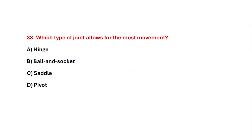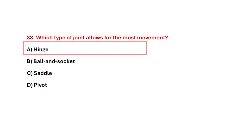Question 33. Which type of joint allows for the most movement? Correct answer is option B, ball and socket.